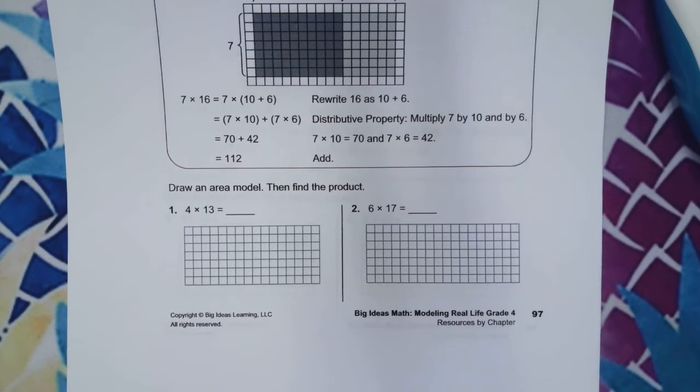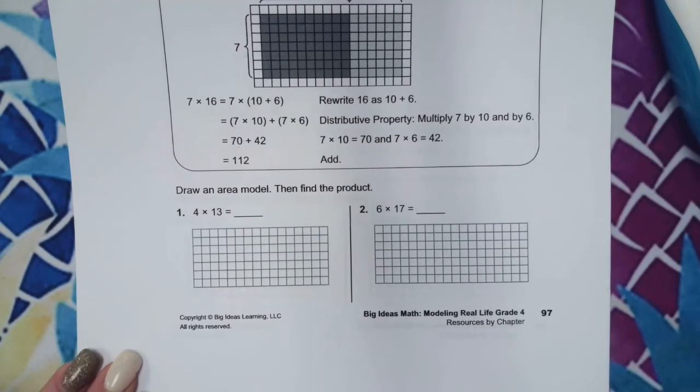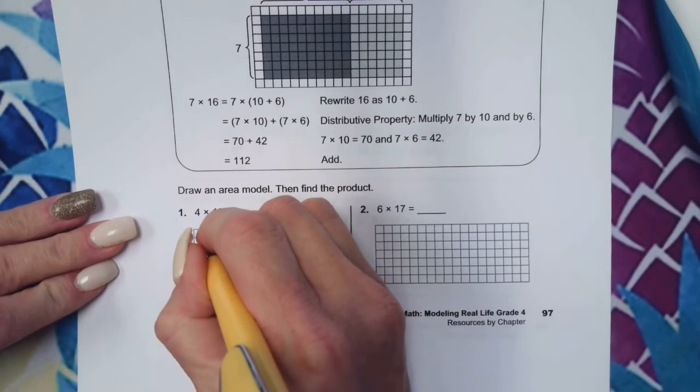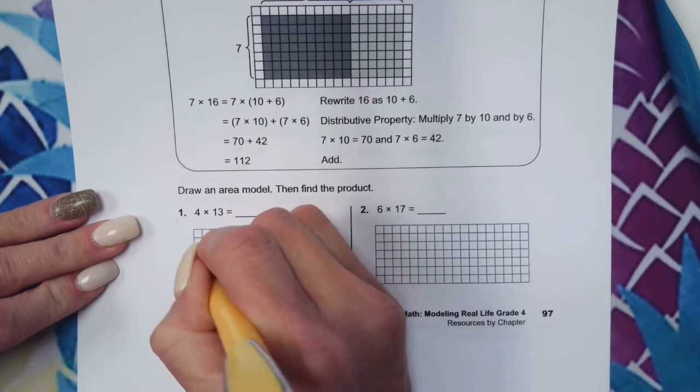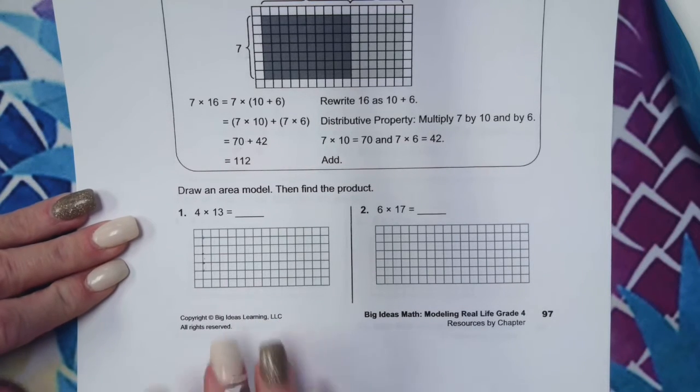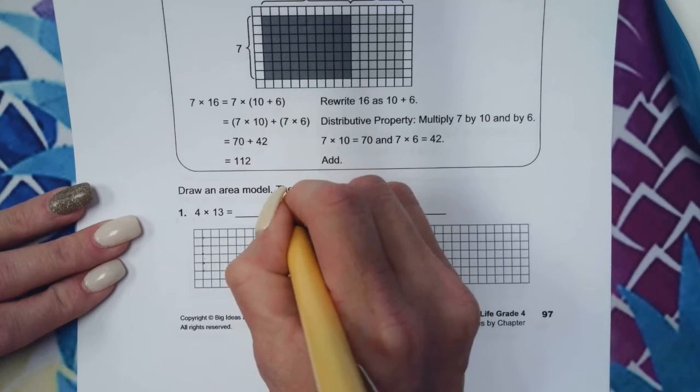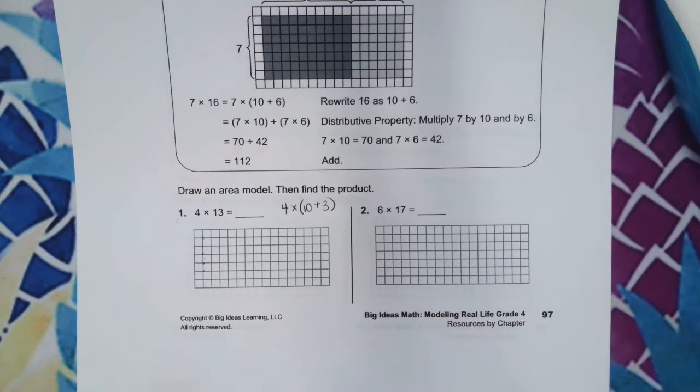So let's take a look at this area model: 4 times 13. This means I need a rectangle that is 4 units long and 13 units long. How can I break apart 13? Good job, 10 plus 3. So I'm going to have one section of my rectangle that's 10 units and one section that's 3 units.